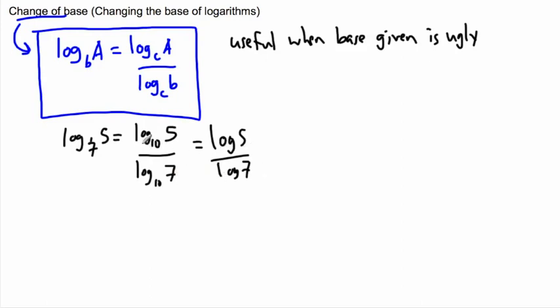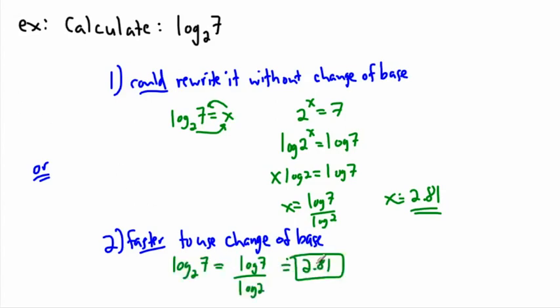Because of that, it's just log 5 over log 7, because base 10 is what your calculator can deal with. So this is easy to do on your calculator, and that was the fastest way. Change of base can actually be useful.